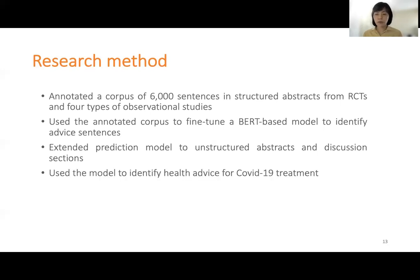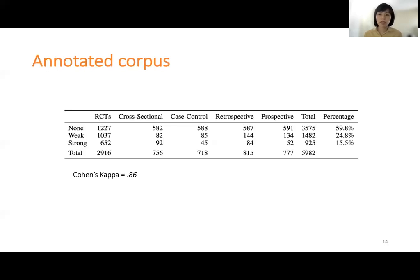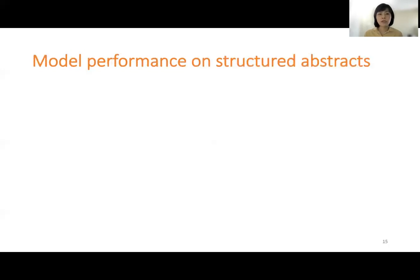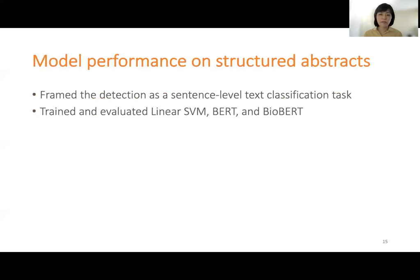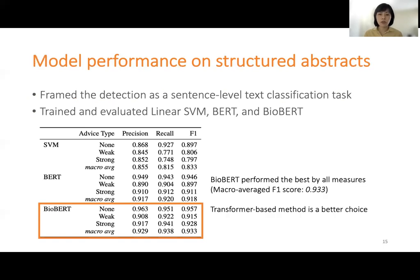After prediction model evaluation, we conducted a case study applying the model to identify advice for COVID-19 treatment in LeadCOVID literature. Our training corpus contains about 6,000 annotated sentences. The Cohen's kappa value is 0.86, indicating almost perfect inter-coder agreement. We trained and evaluated both traditional machine learning models and transformer-based models using 5-fold cross-validation. Our experiment results show that the BioBERT model performed the best, and compared to traditional machine learning methods, the transformer-based approach is a better choice for our task.